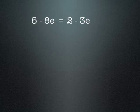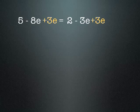Now this is a slightly different equation — you'll notice there are no x's, we have e's instead. There's also an e term on both sides of the equation, and we want to get e equals something, which won't happen while we've got an e on either side. So the first thing we have to do is collect all our e's on one side. We'll collect them on the left, so we add 3e to both sides. On the right-hand side, 2 take away 3e plus 3e means those 3e's cancel out. On the left-hand side we have 5 minus 8e plus 3e, so the next line of our equation looks like 5 minus 5e equals 2.